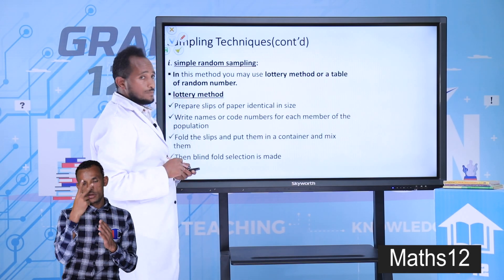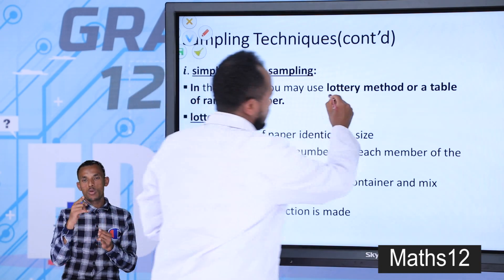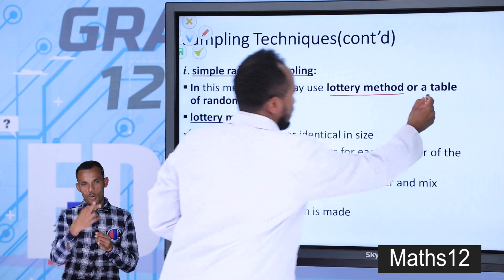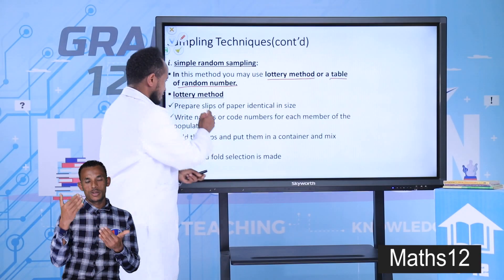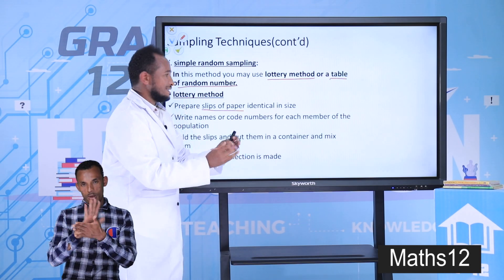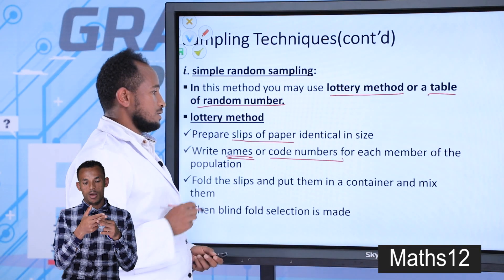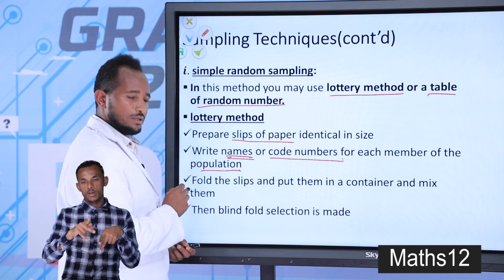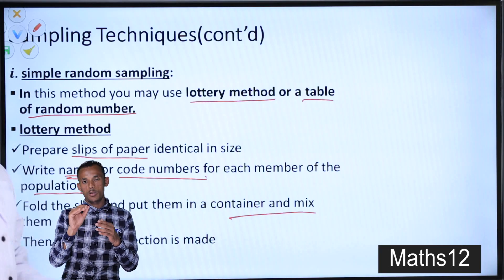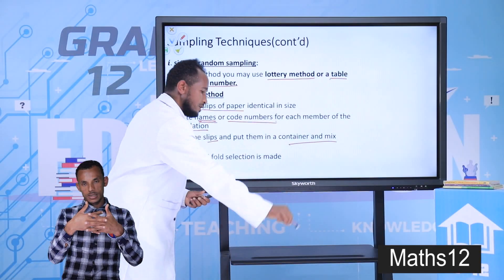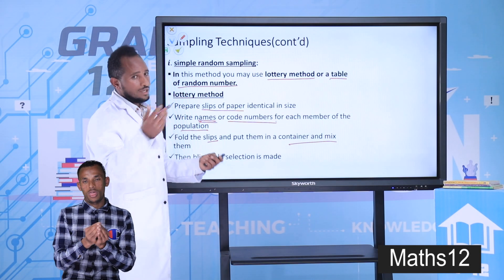Let's see simple random sampling. When you take a sample using this method, you can either use the lottery method or a table of random numbers. The lottery method means you prepare slips of paper that are identical in size and color, and you put names or code numbers for each member of the population. Then you fold the slips and put them in a container, mix them, and apply a blind selection. This is what the lottery technique means.